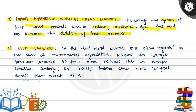The fifth point is overpopulation. In third world countries, it is often regarded as the cause of environmental degradation. However, an average American consumes 40 times more resources than an average Somalian. Similarly, the 5% richest people in India cause more ecological damage than the poorest 25%, making overconsumption as significant a factor as overpopulation.